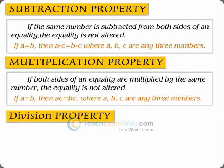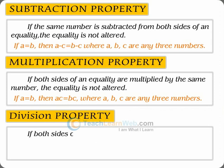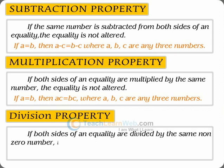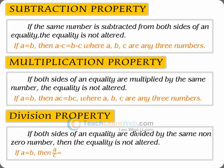Division property: if both sides of an equality are divided by the same non-zero number, then the equality is not altered. If a equals b, then a divided by c equals b divided by c, where a, b, and c are any three numbers and c is not equal to 0.